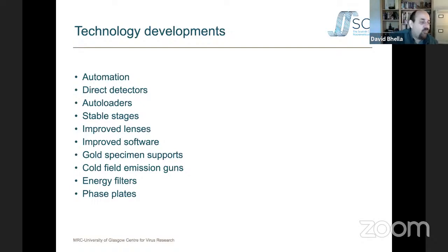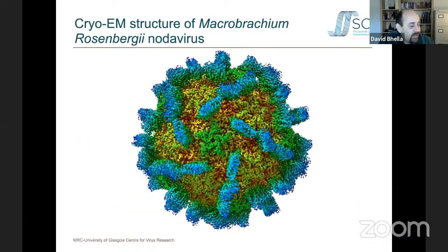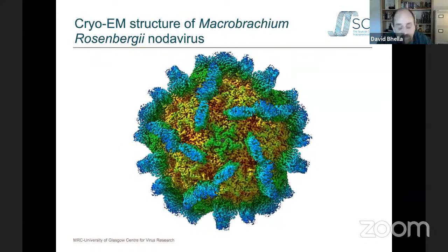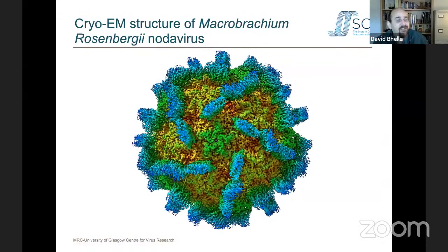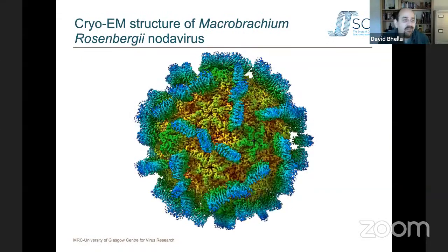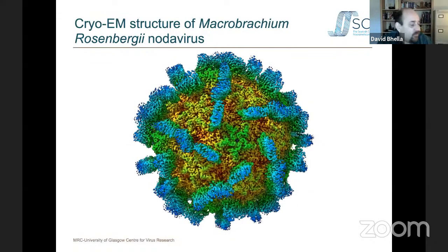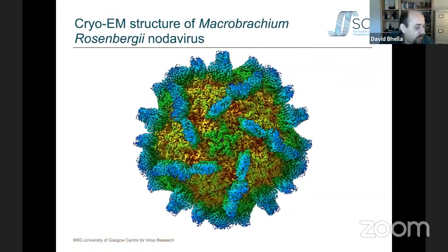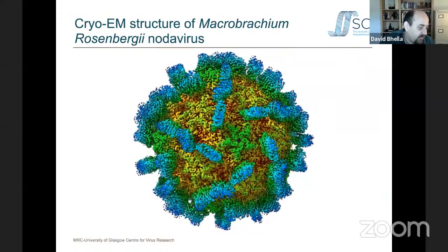All these technologies come together to allow high-resolution structures, particularly for icosahedral viruses — these highly symmetrical objects can be processed to compute a three-dimensional density map with sufficient resolution to build atomic models. This is the first high-resolution cryo-EM structure solved in my lab: a virus that infects freshwater shrimp — Macrobrachium rosenbergii nodavirus — which causes catastrophic losses in freshwater shrimp hatcheries, of importance for food security and economics in many nations including India.